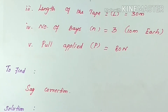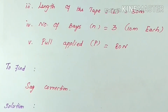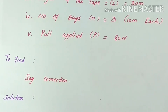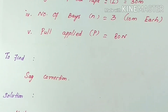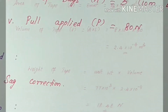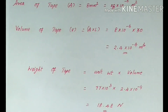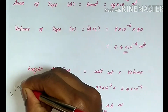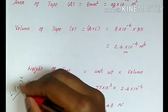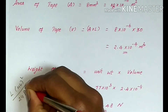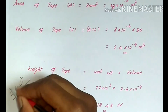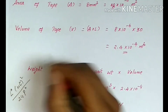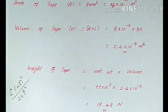Now for the solution. The sag correction formula is: L* × (w × L*)² divided by 24P², where L* is the bay length. So L* is 10 meters each.